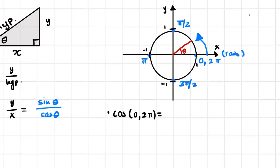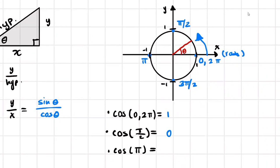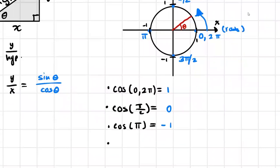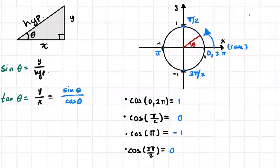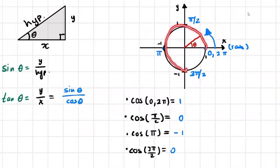Cosine of zero or two pi gives one. If we find cosine of pi over two — looking at that point — that's on the y-axis, so the x value is zero. Cosine of pi over two equals zero. If we then have cosine of pi — we've made half a revolution — our value in this case will be negative one. Then cosine of three pi over two is zero again, because at that point the x coordinate is zero.